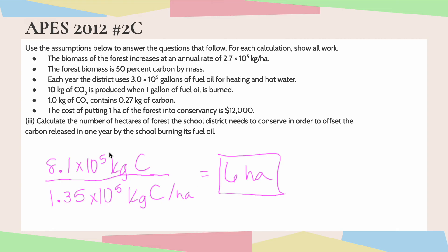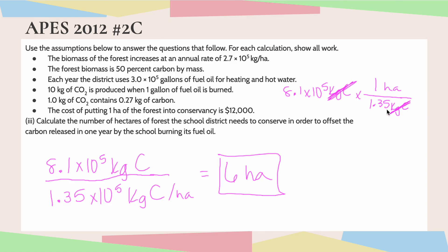You could also set this up a little differently. What I did was basically divide kilograms of carbon by kilograms of carbon per hectare, so you can nicely see how the units cancel diagonally. Once you get more comfortable with these problems you can do it this way, but I just wanted to make that note in case seeing me go quickly through the units was a little confusing.